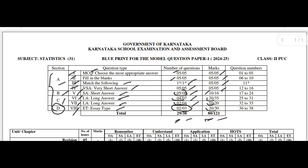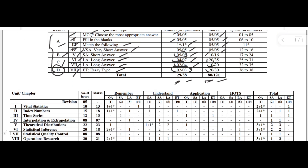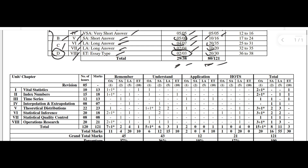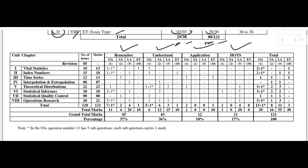The whole question paper is divided into several types: remembrance, understanding, and application. The question paper consists of totally 37% remembrance questions, 36% understanding questions, and 10% application questions. If you add all these types you will get 100%.